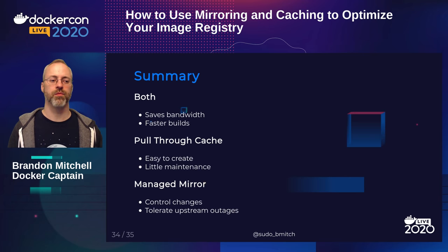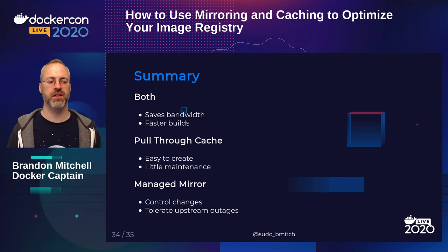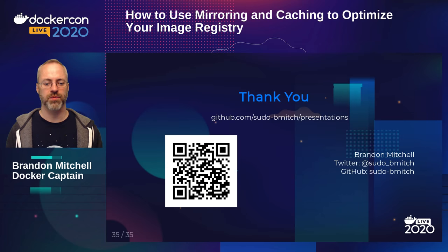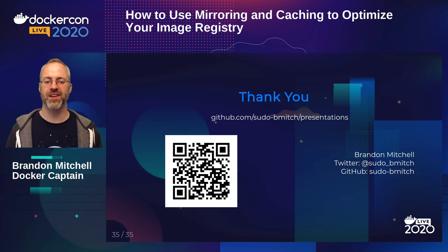To summarize: both caching and mirroring will save bandwidth and give you faster builds. For the easy option with low maintenance, use a pull-through cache. For more control — tolerating upstream outages and managing change — use a managed mirror. The GitHub link and QR code on the final slide will take you to all the demos, slides, and presenter notes. Thank you, stay safe, stay healthy.